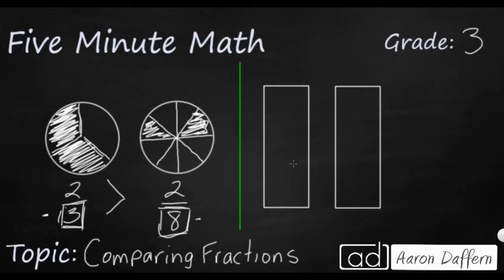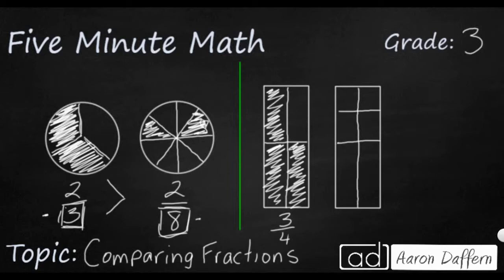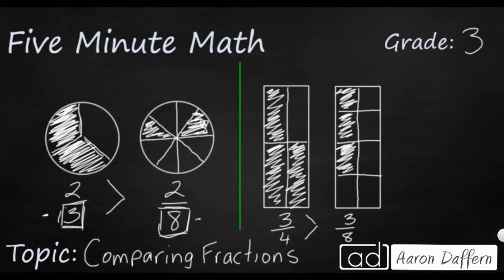If we look at these rectangles, we can see the exact same thing happening. I'm going to take this rectangle on the left and break it up into fourths, then shade in three of them — so that's three out of four pieces shaded. The rectangle on the right I'll break into fourths, then cut each fourth in half to get eighths. Each of these eighths is much smaller than each of my fourths. So we can say that three fourths is greater than three eighths, because the numerators are the same and each fourth is a much bigger chunk than each eighth.